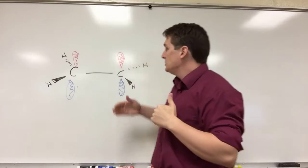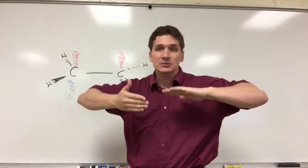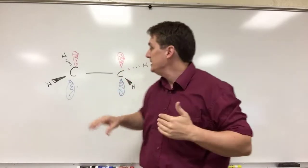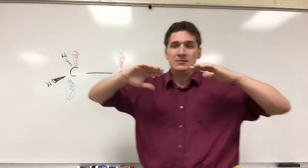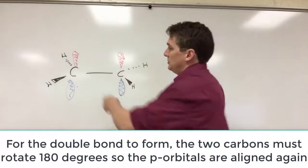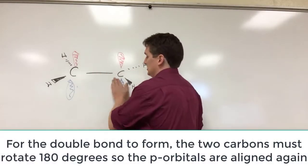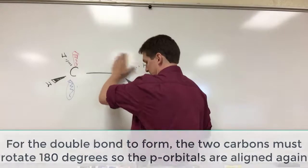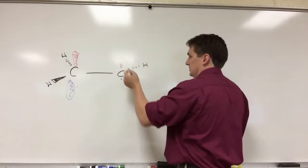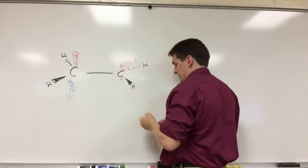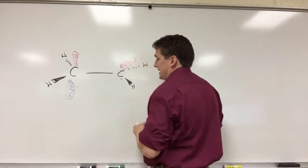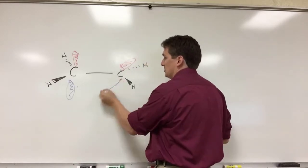The rotation has to go 180 full degrees. Because if it doesn't go 180, these two p orbitals can't overlap. If it only goes 90 degrees, we'll have a situation where this p orbital is up and down, and this p orbital is into and out of the board. In that case, they can't overlap to form a bond.